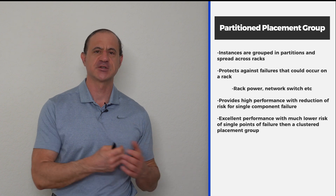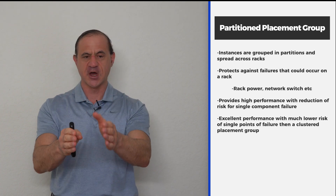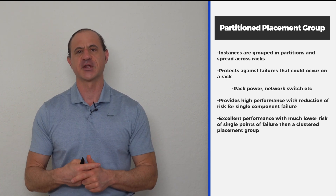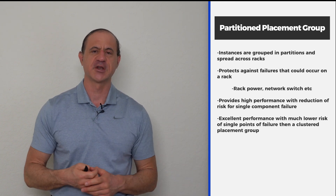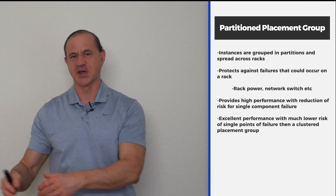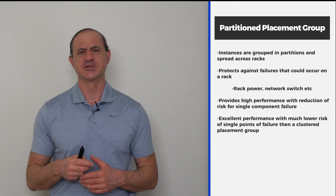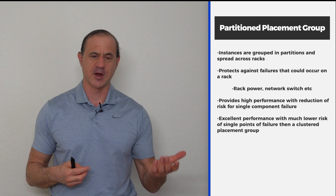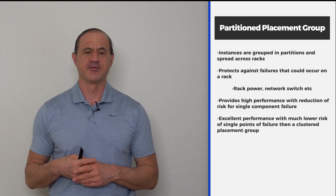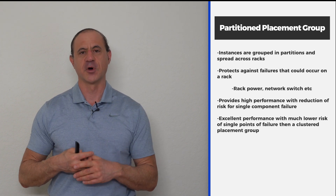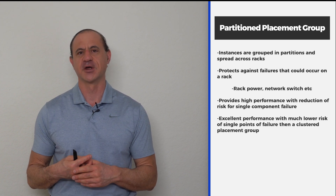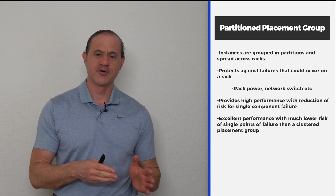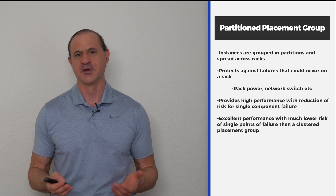The next concept is the partition placement group. Instead of placing all your servers in the same rack, you're going to move them into two different racks, but still in the same availability zone and close to each other. The reason you do this is you're going to have more redundancy than you would have with a cluster placement group, while still grouping your instances in the same data center, which really reduces the latency associated with communicating from data center to data center. This protects you against a failure that would occur in a rack — a rack power failure, a network switch failure. Think of this as dividing load across racks inside of a data center. Good performance, but with much less risk and fewer single points of failure than a cluster placement group.